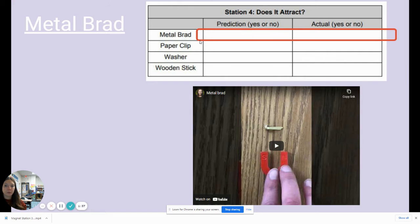So we are going to start with the very first item, a metal brad. You can see it at the top of this video right here. I need you to make a prediction. Do you think that this metal brad will attract to our magnet? I need you to write yes or no in this prediction box right here that I have my mouse on. Go ahead and do that now. Pause the video if you need extra time.